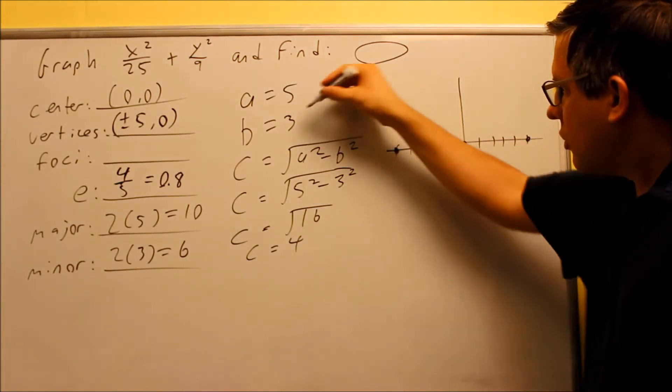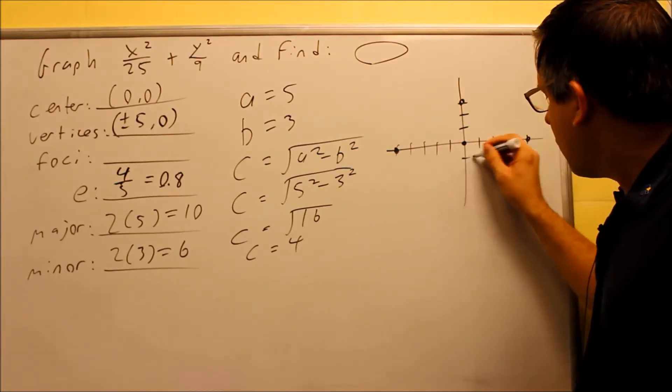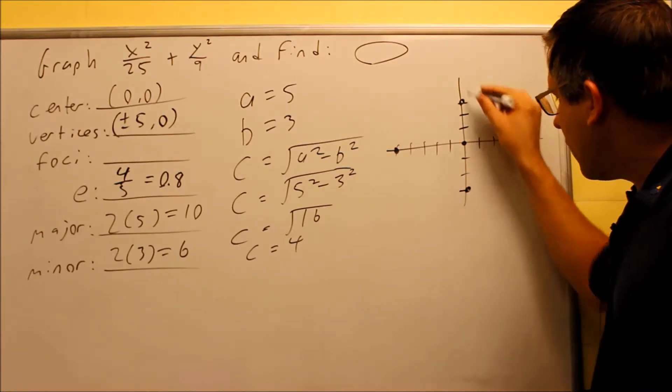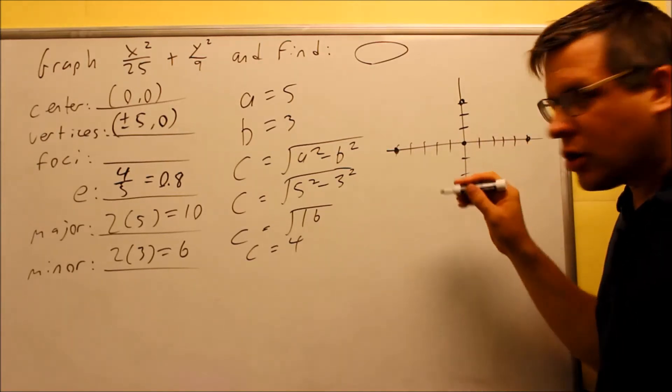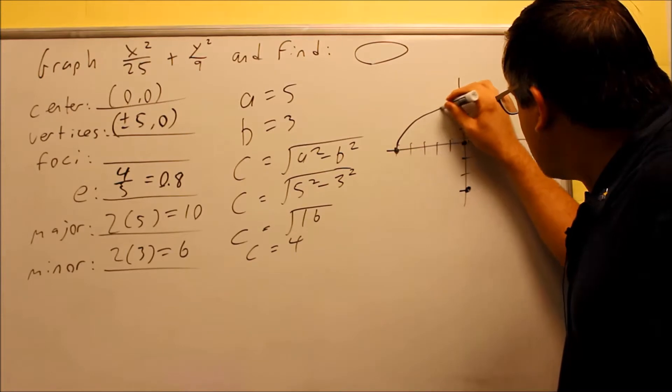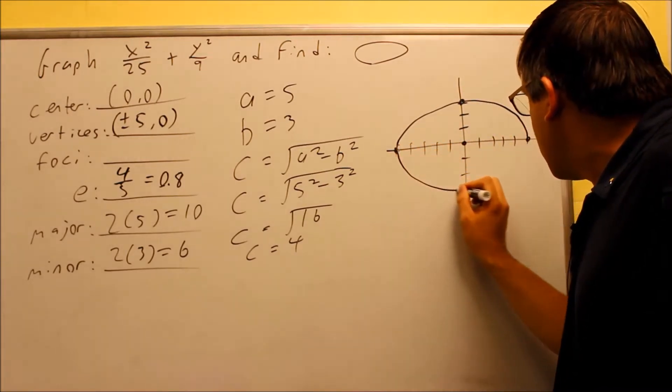Now, we still want to go up and down with our b value. We go up 3, make a dot, and down 3, make a dot. Now we don't have to indicate these points here, but we're going to use them as reference so that way we can draw our graph itself. So now we have this, and we have this part down below here.